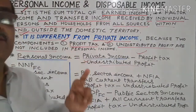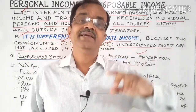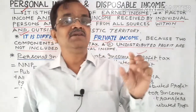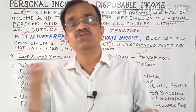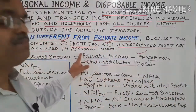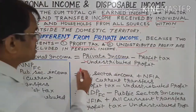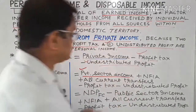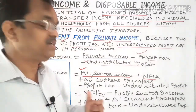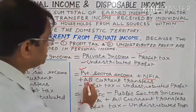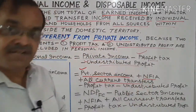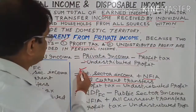Now, the term private income was already described in my previous video. The link is given in the description — you can go through those topics. Private income is calculated as: private sector income plus NFIA (Net Factor Income from Abroad) plus all current transfer incomes. The sum total of these three gives us private income.